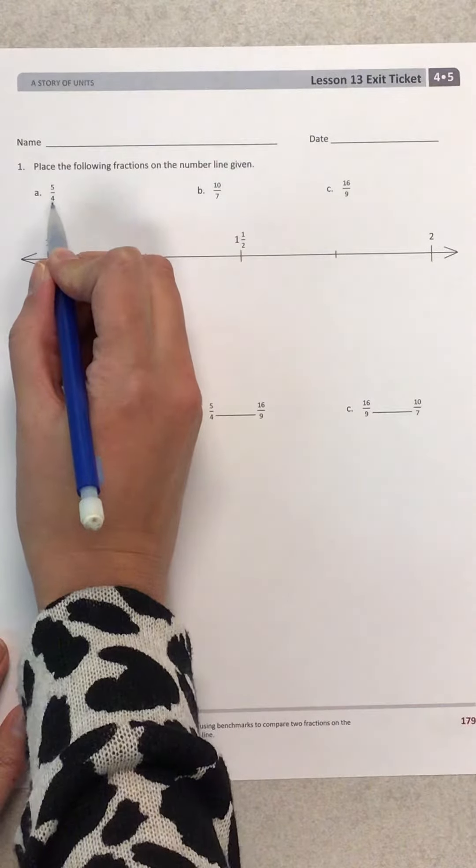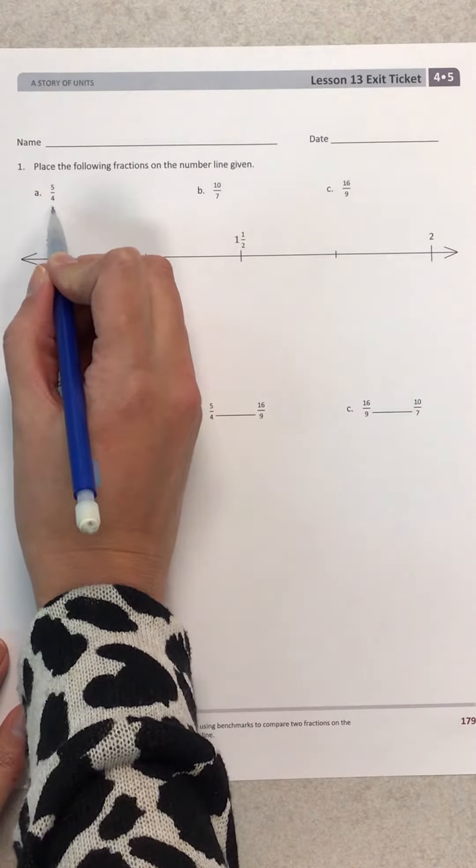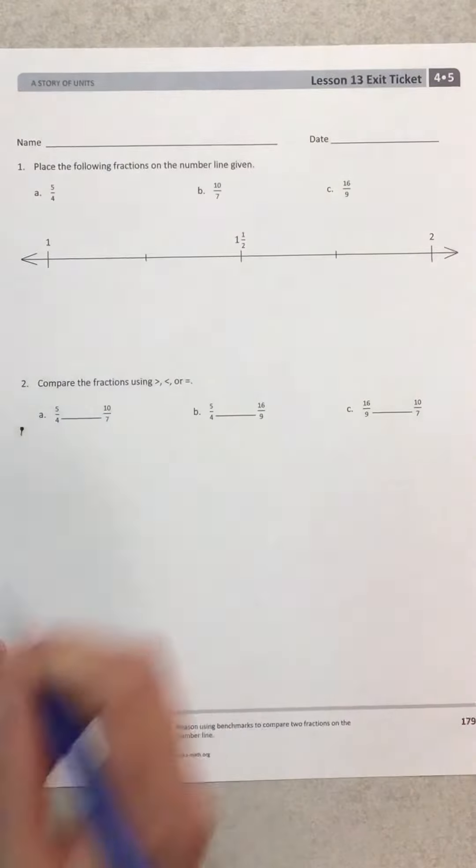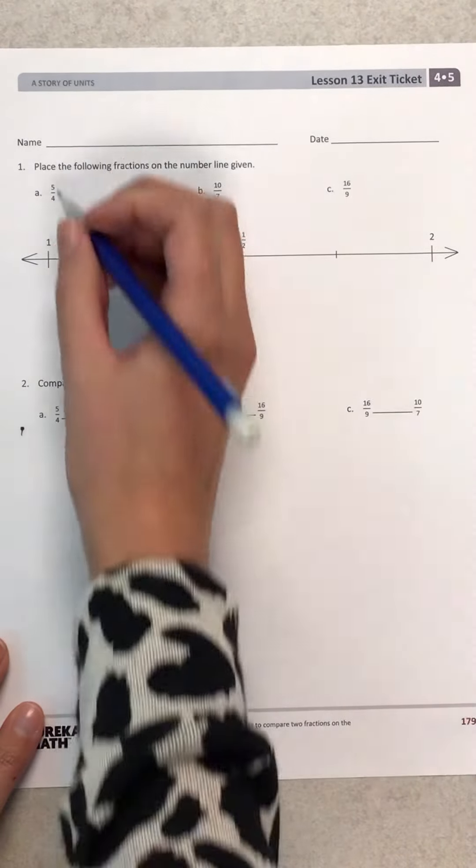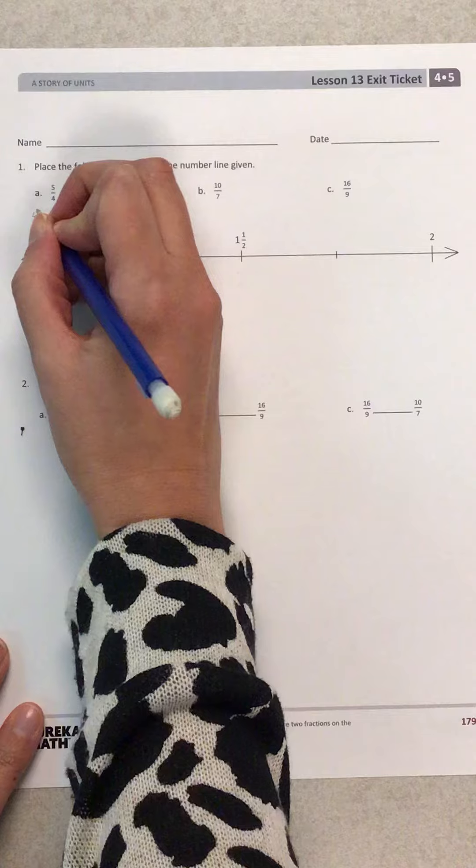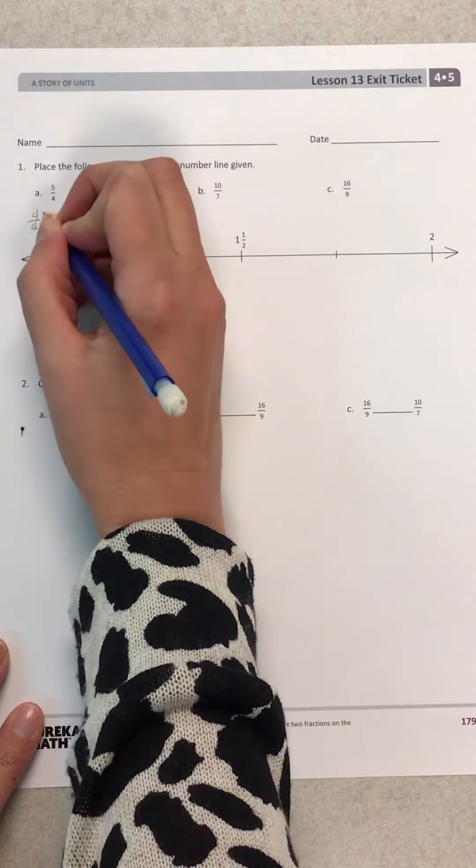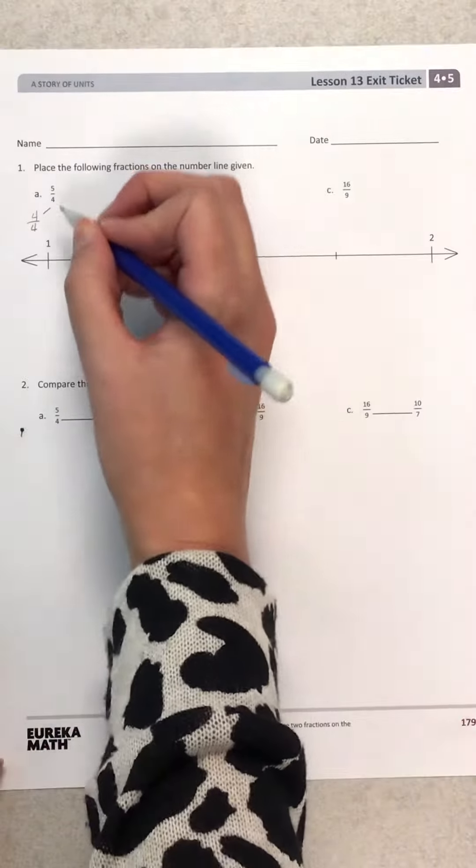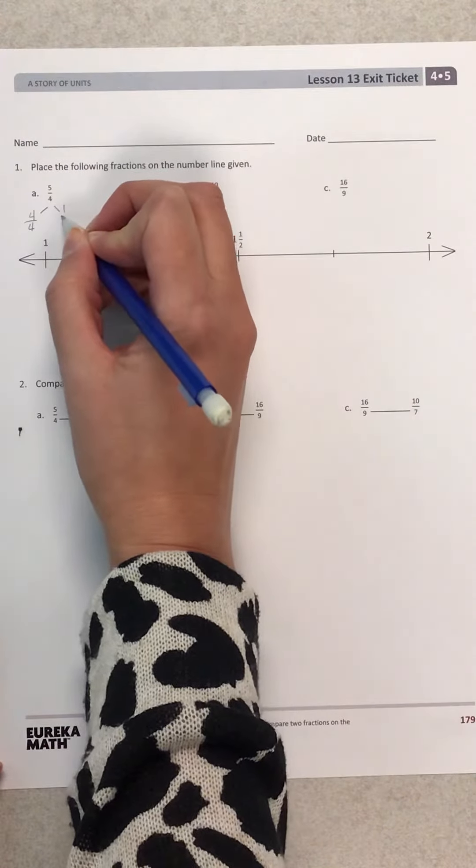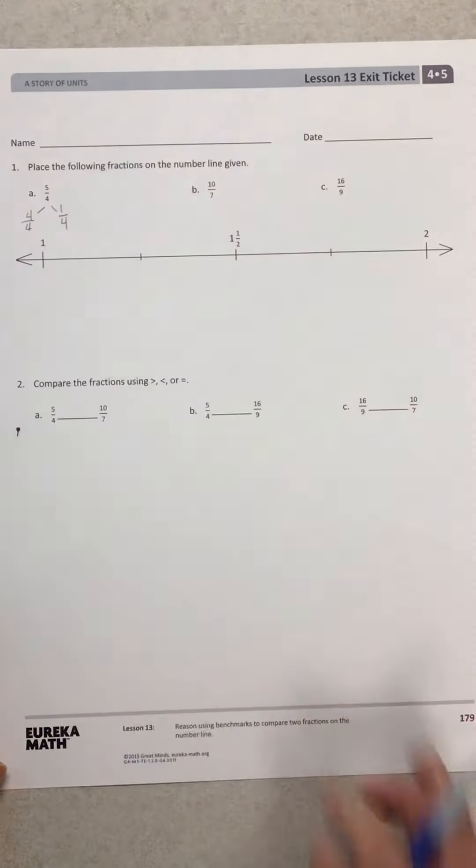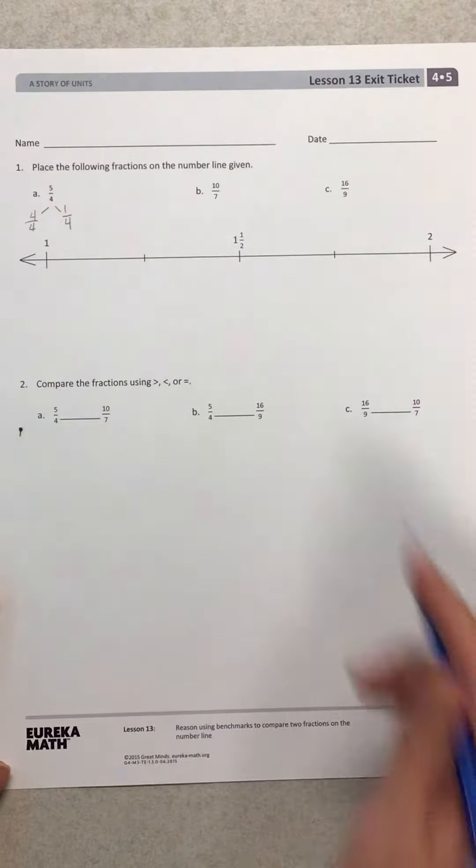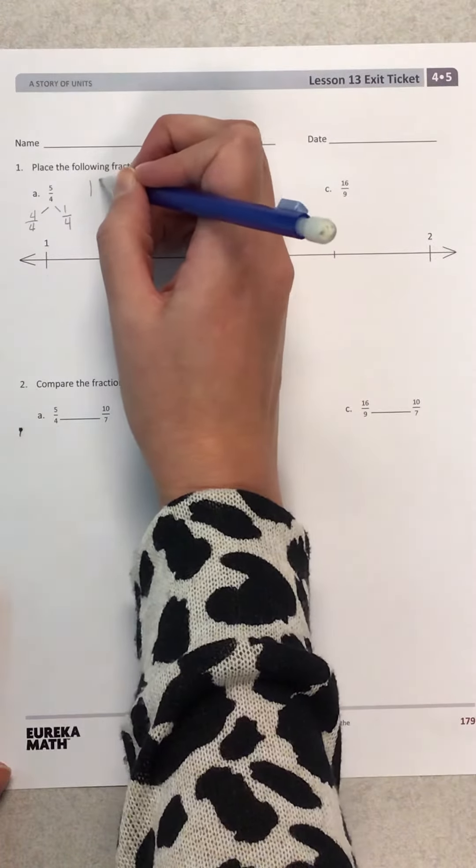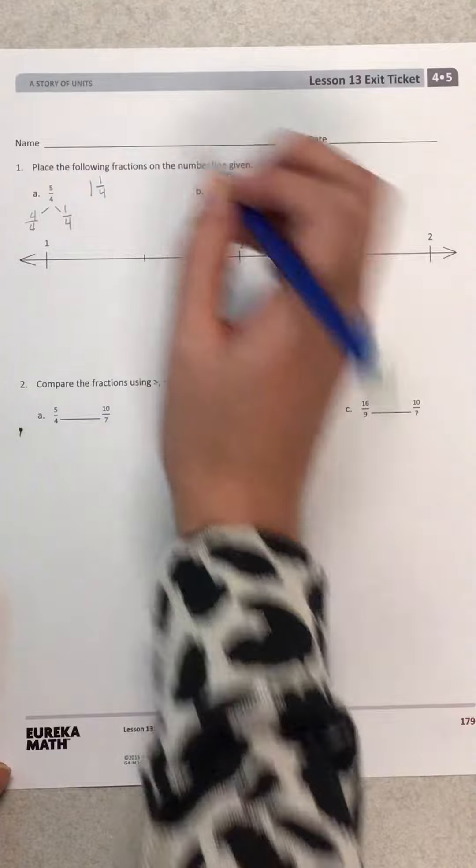So if I look at 5 fourths first, before we can plot that, and if I want to turn that into a number bond, it would look like 4 fourths because I know that's my one whole. And then I'm thinking what's left was 1 fourth. So 5 fourths is like saying I have one whole and 1 fourth left over.